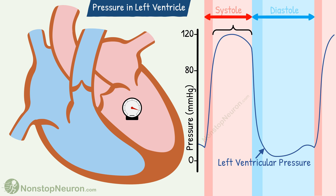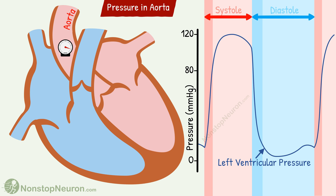Now during this part, the aortic valve is open and the ventricle is pumping blood into the aorta. So to understand the aortic pressure, this part is very important. Let's see the pressure in the aorta now. At the beginning of the ventricular systole, the pressure in the aorta is about 80 mmHg.